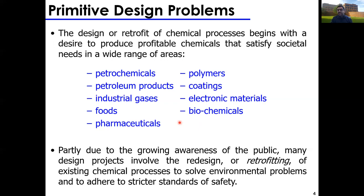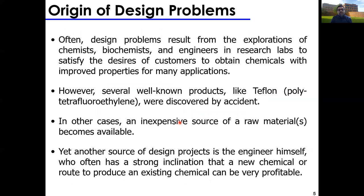Recently, due to growing environmental awareness, there's a lot of retrofitting of old and legacy plants — most commonly power plants being decommissioned to meet new environmental regulations. The origin of design problems can come from several sources. Typically, a chemist or engineer in a research lab — whether a national lab, university, or industrial lab — discovers a new synthesis route for an in-demand chemical and passes it to an engineering team to brainstorm the best way to produce it at scale.